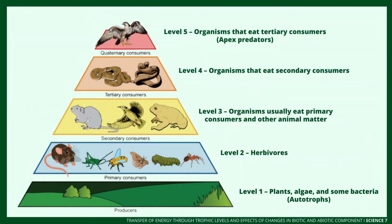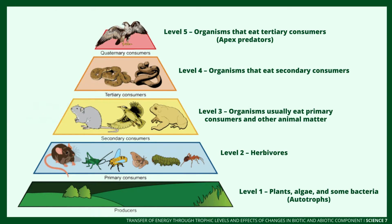Level 1 consists of plants, algae, and some bacteria — these are what we call autotrophs. The second level is what we call herbivores. The third level consists of organisms that usually eat primary consumers and other animal matter. For example, a rat can eat fruits but can also eat other organisms to survive. A frog can eat insects or other organisms it needs to survive.